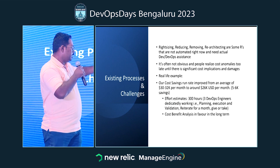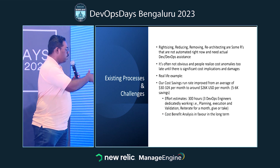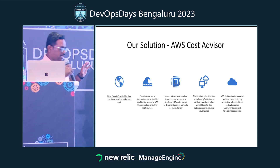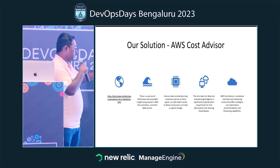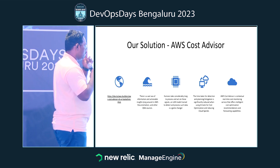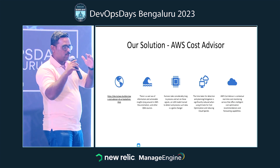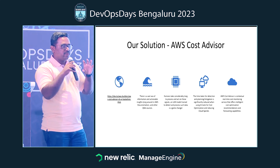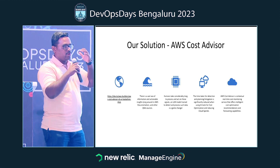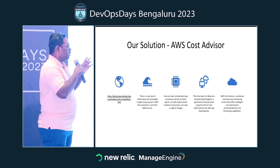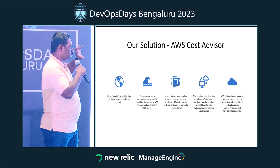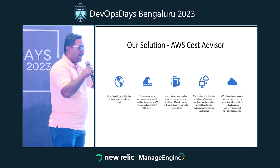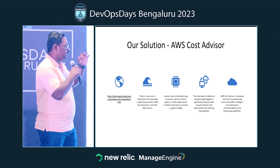Let's see what the solution is and how we reduced costs further. The solution is completely open source — there is a Python notebook you can download. RAG basically grounds the LLM, keeping its context only for the AWS Cost Advisor, so all cost optimization CSVs are ingested into the vector database and the LLM only answers based on that data. Humans take considerably longer, but with the data ingested into the LLM, the time taken for anomaly detection is also reduced.